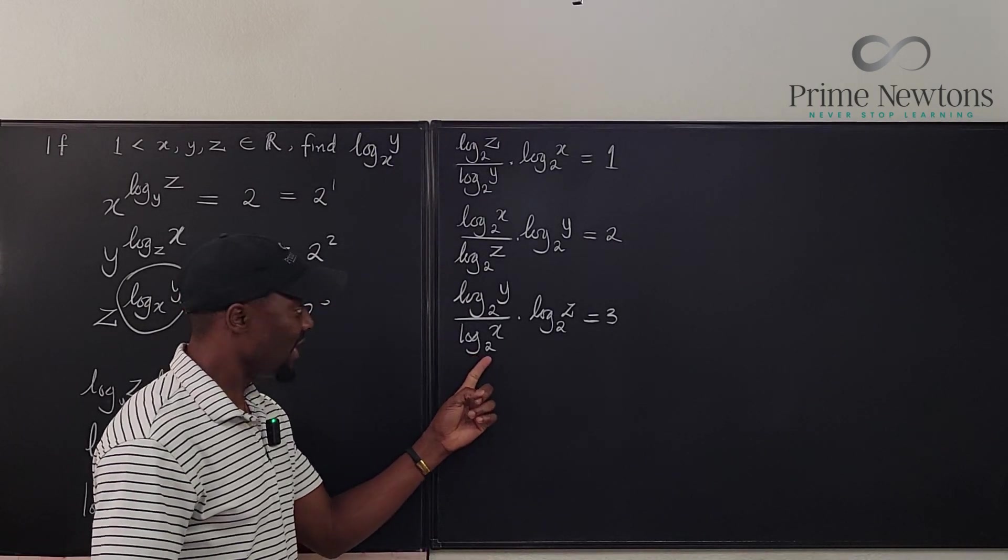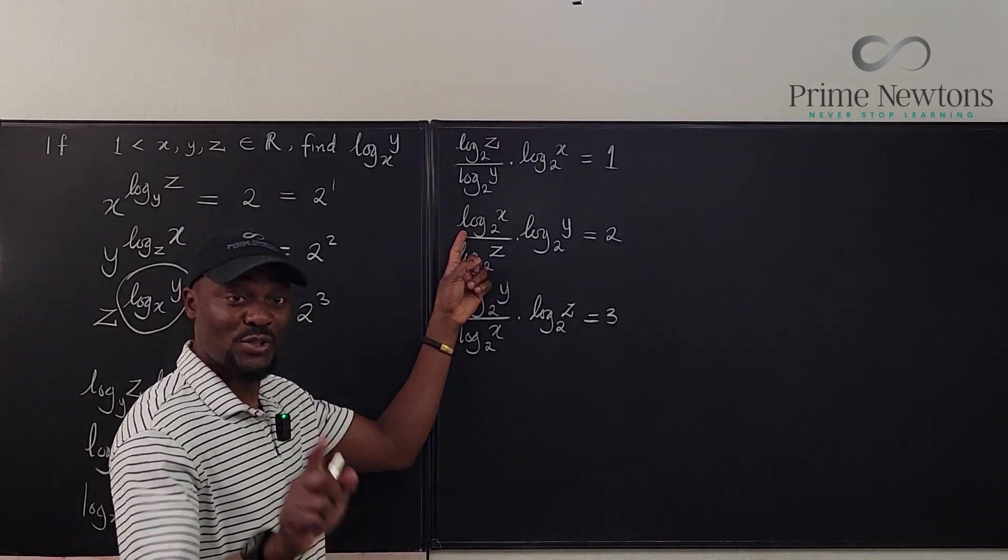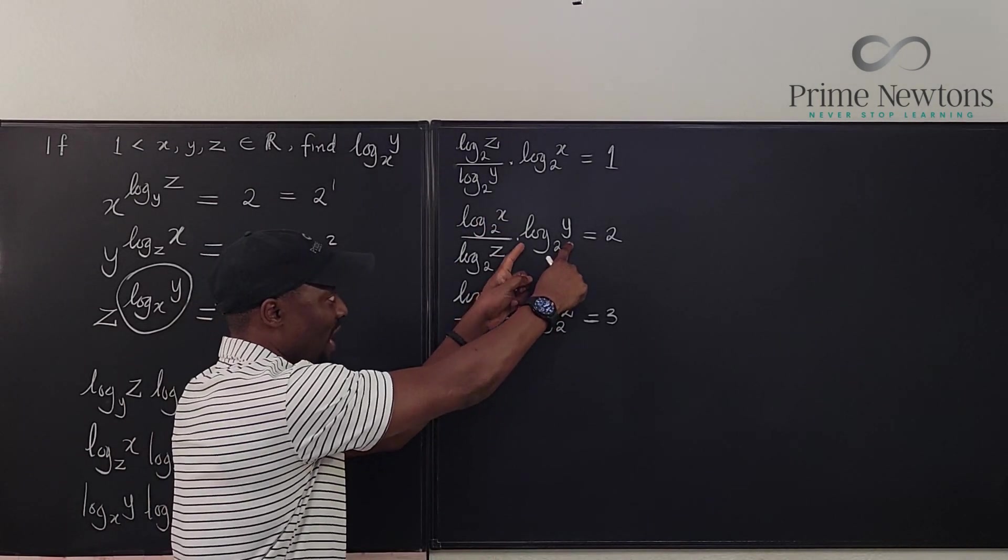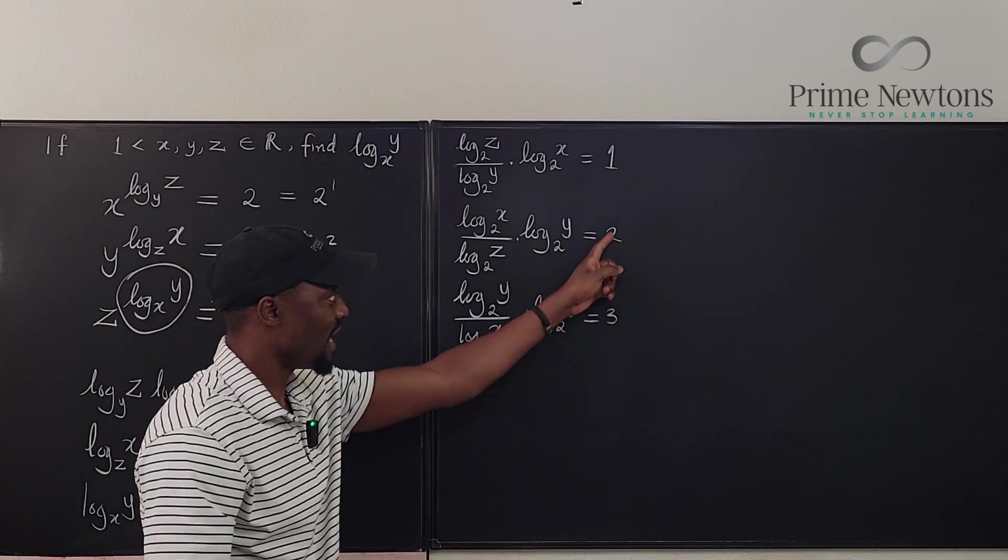Oh, there's log x here. This is going to cancel this. So what you have left in this multiplication is just log y times log y. And you're going to be multiplying these two.